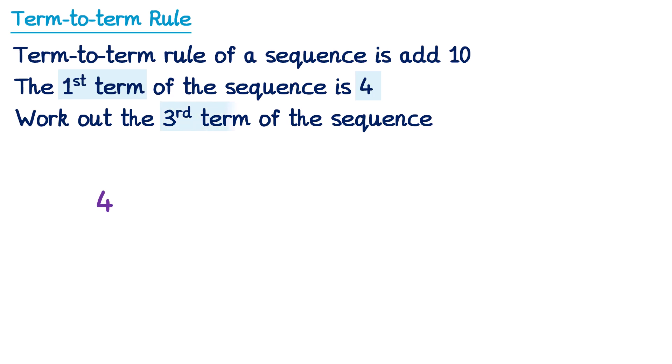But we need to work out the third term, so we need to work out two more terms, but we're told the term-to-term rule is add 10. So to get from the first term, which is 4, to the second term, we just need to add 10. And 4 add 10 is 14.